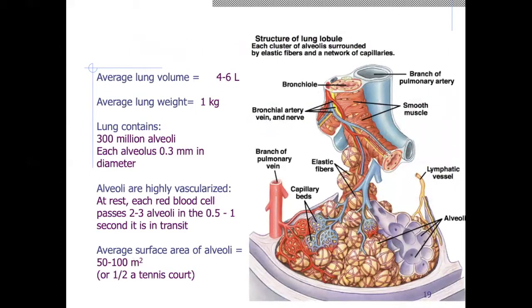Some interesting statistics about our lungs: the average lung volume is around 4 to 6 liters. The average weight of the lung is around 1 kilogram — about 2.21 pounds. Each lung contains 300 million alveoli. I'll repeat that — 300 million alveoli. Each alveolus is about 0.3 millimeters in diameter, which is incredibly small — we essentially need a microscope to see them.